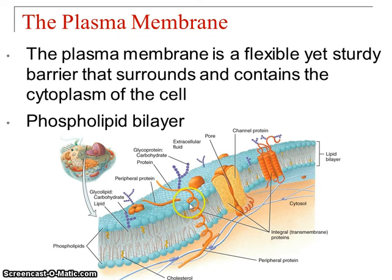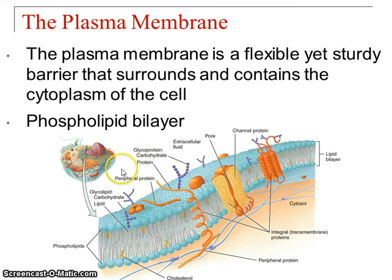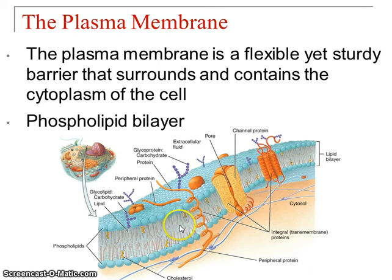Your phosphate heads are polar, which means they have charge. They like water — they're hydrophilic — so they're on the outside touching the water. The phospholipid tails, on the other hand, are hydrophobic, meaning water-fearing. They are non-polar and don't dissolve in water, so they stay away from it. They're hidden away from the water in the middle.